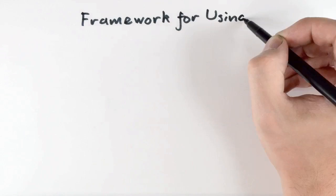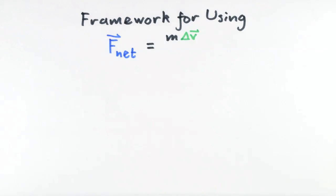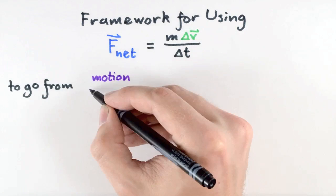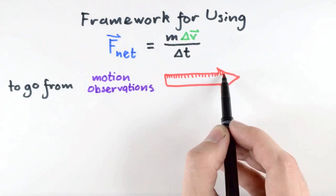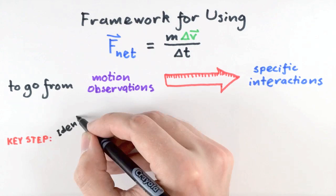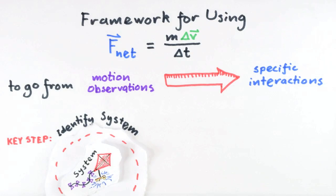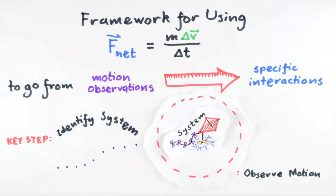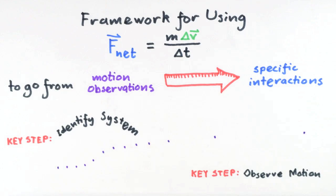In previous lectures we developed a framework founded on Newton's Second Law for proceeding from observing motion of our system to solving for specific interactions of the surroundings with the system. To apply this framework we begin by identifying the system whose motion we're studying, then we observe the system motion to determine the net force, F net. At this step we fleshed out how to describe observations in terms of the change in momentum over the change in time.